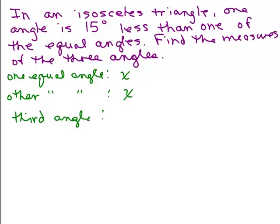It says it's 15 degrees less than one of the equal angles. Well, one of the equal angles is x, so you'd have to subtract 15 from x. Again, I'm not writing in the degree symbol, but in reality it would be minus 15 degrees. Okay, now we need to find the measures of the three angles. And what do I know about the three angles of any triangle? We know they add up to 180 degrees. So we take the first angle plus the second angle plus the third angle.